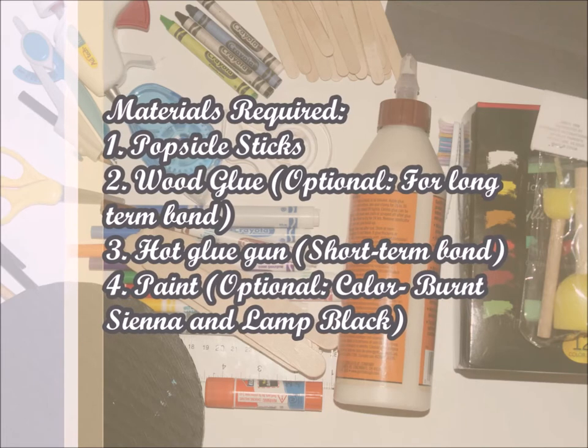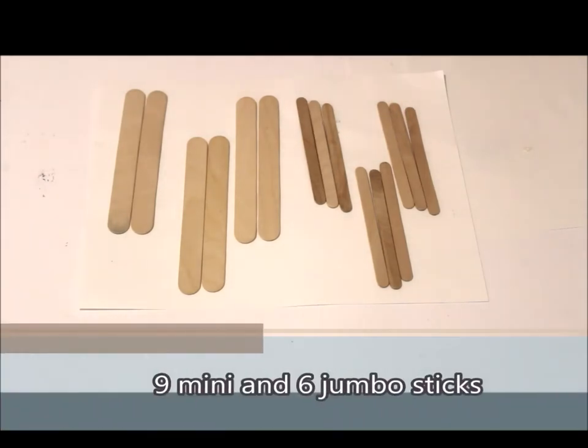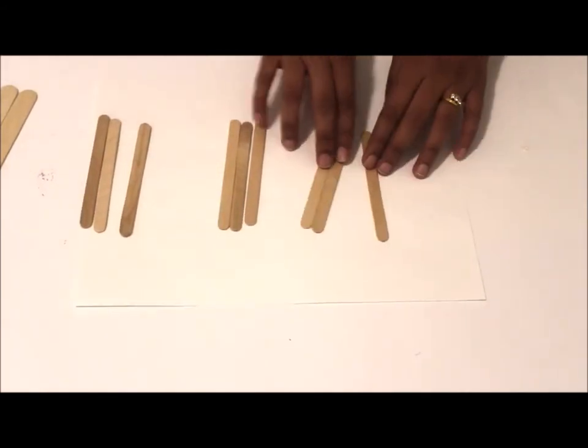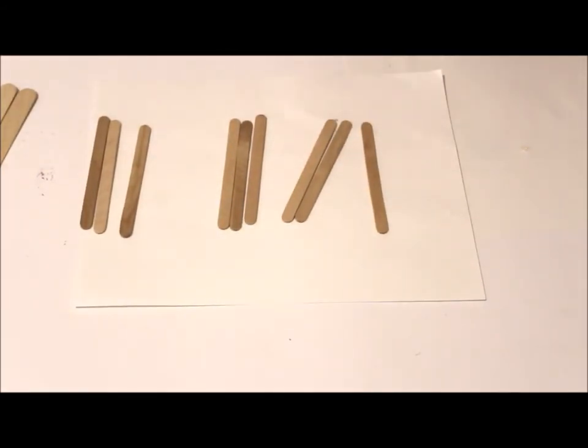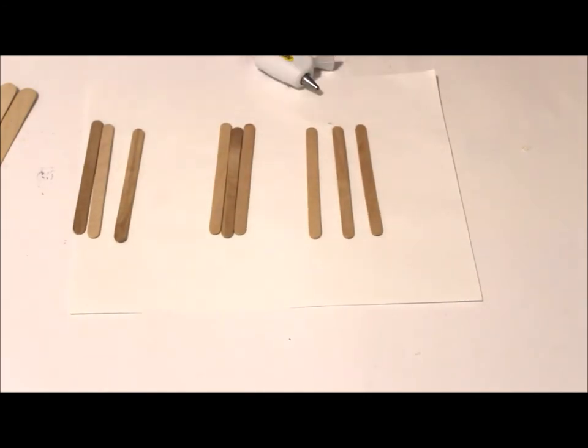Here I am using six jumbo and nine mini popsicle sticks to create a base. Glue three mini sticks on top of each other and repeat this for the other two sets as shown.